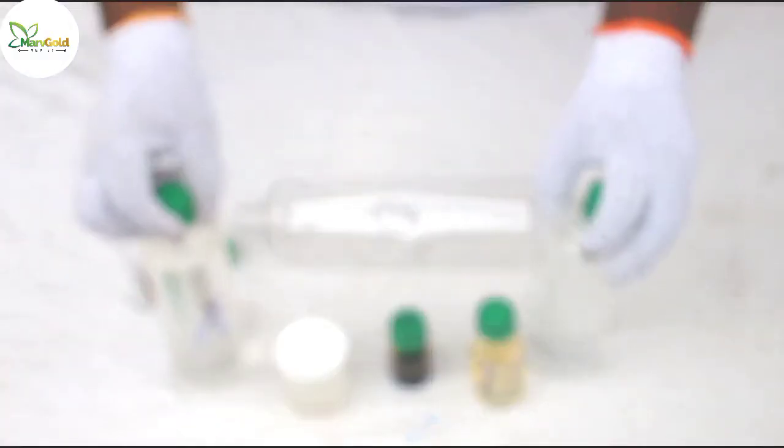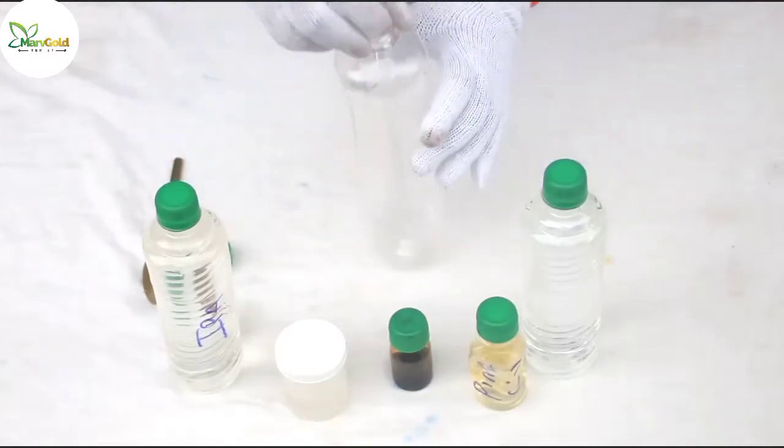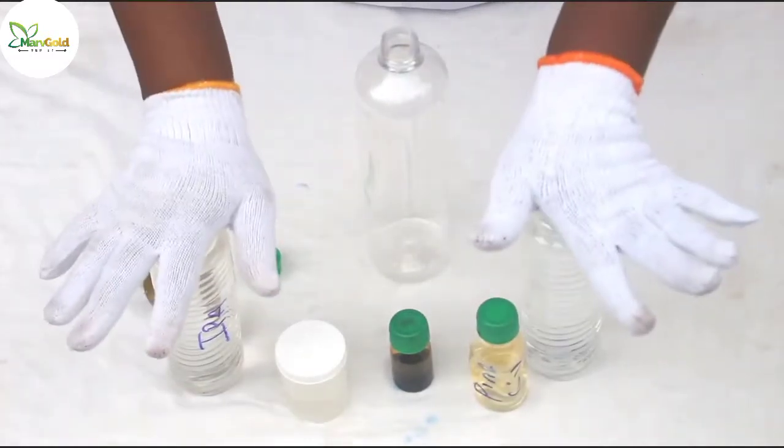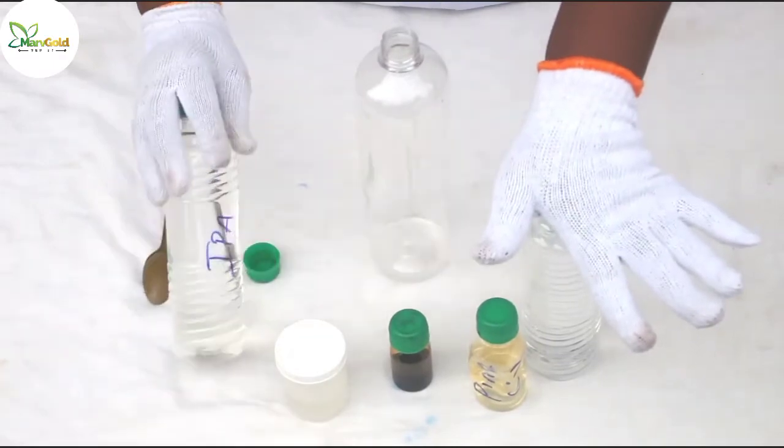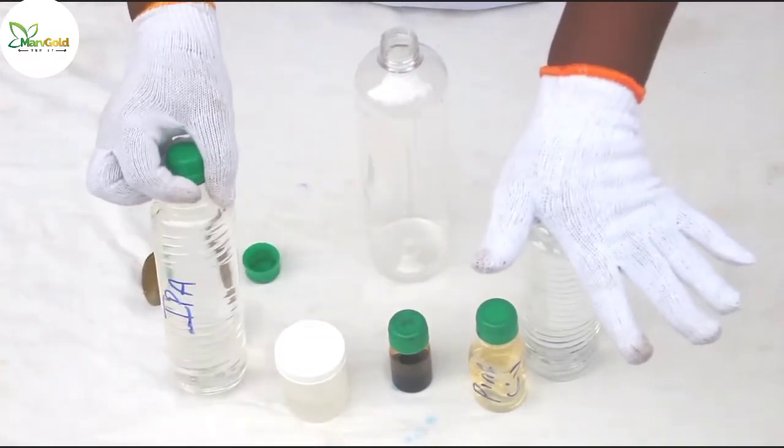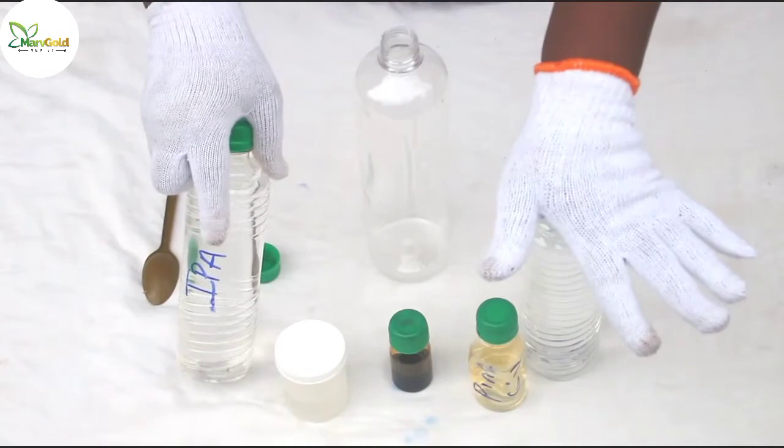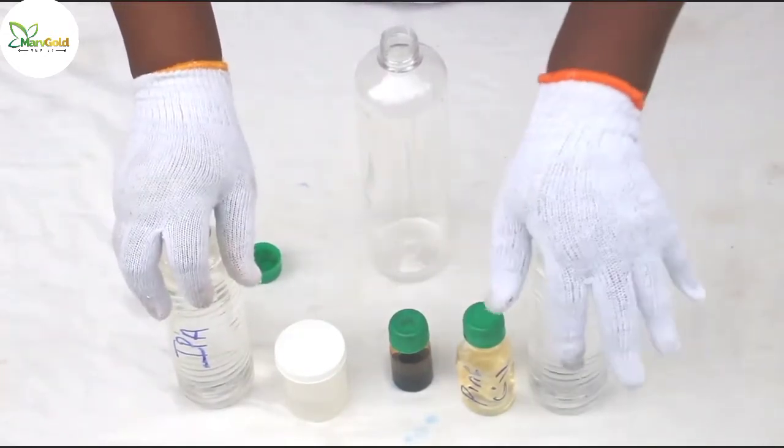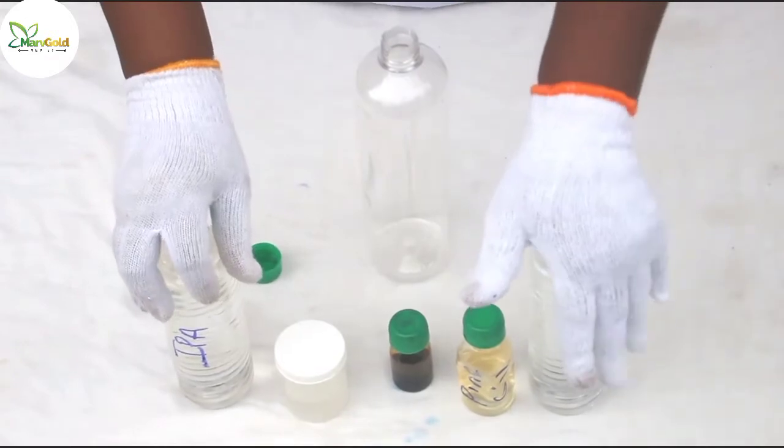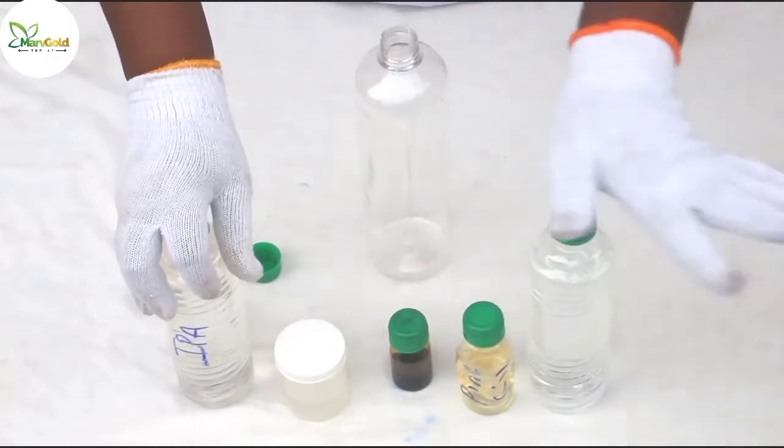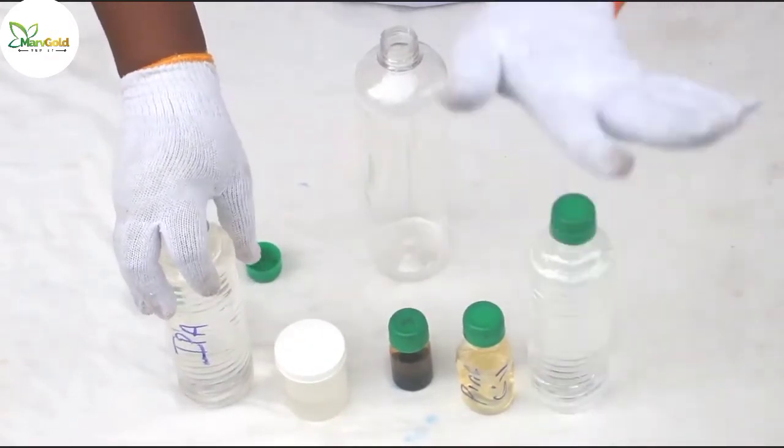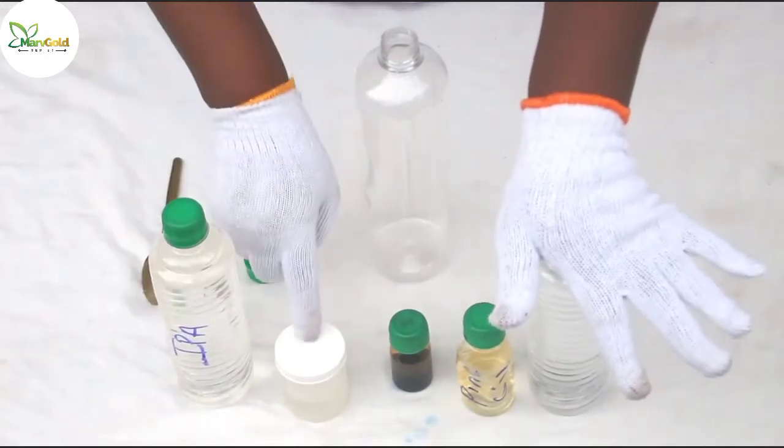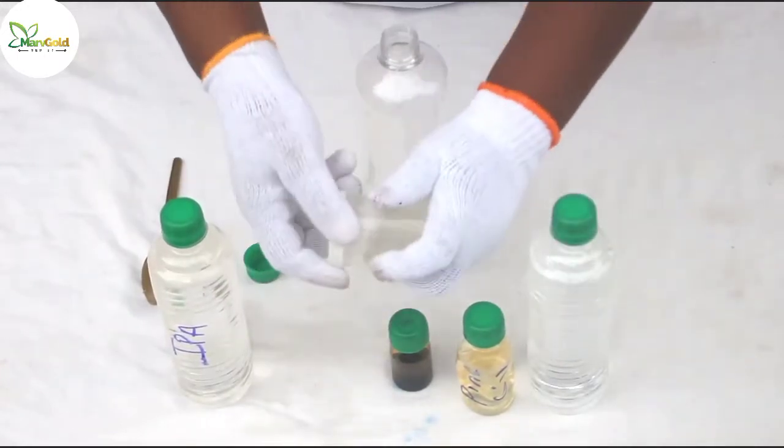Welcome back guys. Today I said we'll be learning how to make our antiseptic. So, identification of these various chemicals. Here is my isopropyl alcohol. As you can see, the short form is IPA. Here is my water, my normal water. You can use your pure water, you can use distilled water. Just make sure that the water is clean and free of impurities.